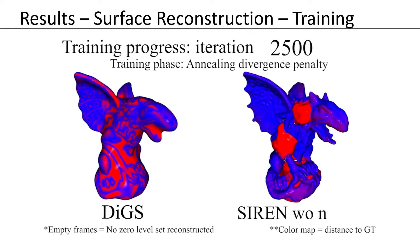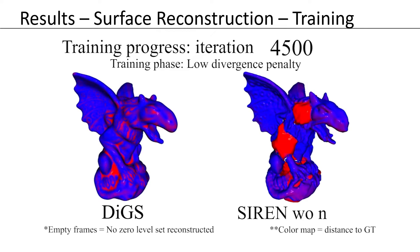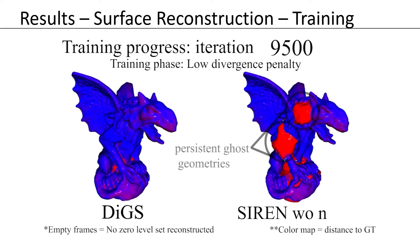Here, colors represent distance to the ground truth surface. It shows a coarse shape obtained at the end of the high divergence phase, and then as training progresses, it becomes tighter and tighter. In comparison, SIRENs without normal supervision gets stuck with persistent ghost geometries.